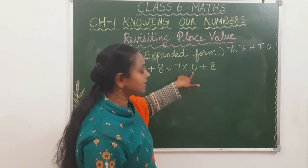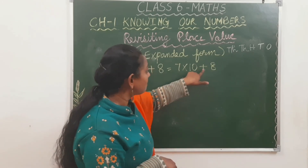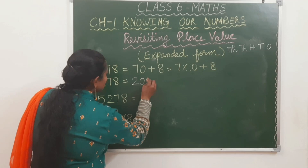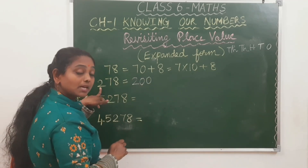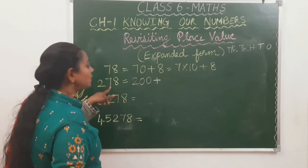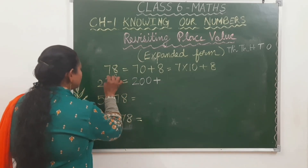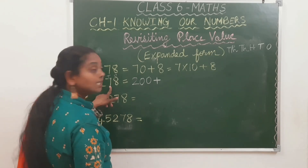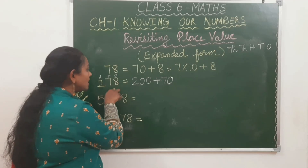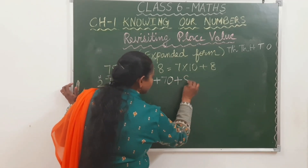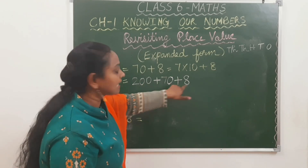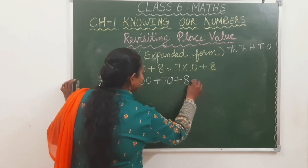Now let's expand 238. First, write the place values: 1s, 10s, 100s. The digit 2 is in the hundreds place, so we write 200. Plus — in expanded form we always use a plus sign. 7 is in the tens place, so we write 70. 8 is in the ones place, so we write 8 as it is. So 238 equals 200 plus 70 plus 8. We can further expand: 2 into 100 is 200, plus 7 into 10 is 70, plus 8 into 1 is 8.